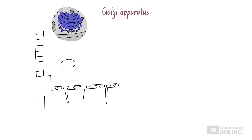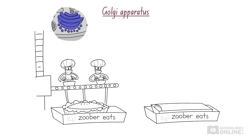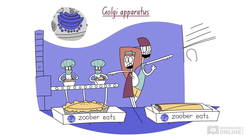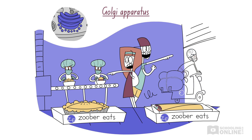Sally's next destination is the headquarters of a popular food delivery company. Many restaurants send their food to be processed and packaged on site. Delivery workers speed away to deliver food within, or even outside of, the city. Just like the delivery company, the Golgi apparatus sorts, packages and delivers cell products. Instead of food, lipids, proteins and other molecules are packed in vesicles and transported to locations inside the cell or outside.